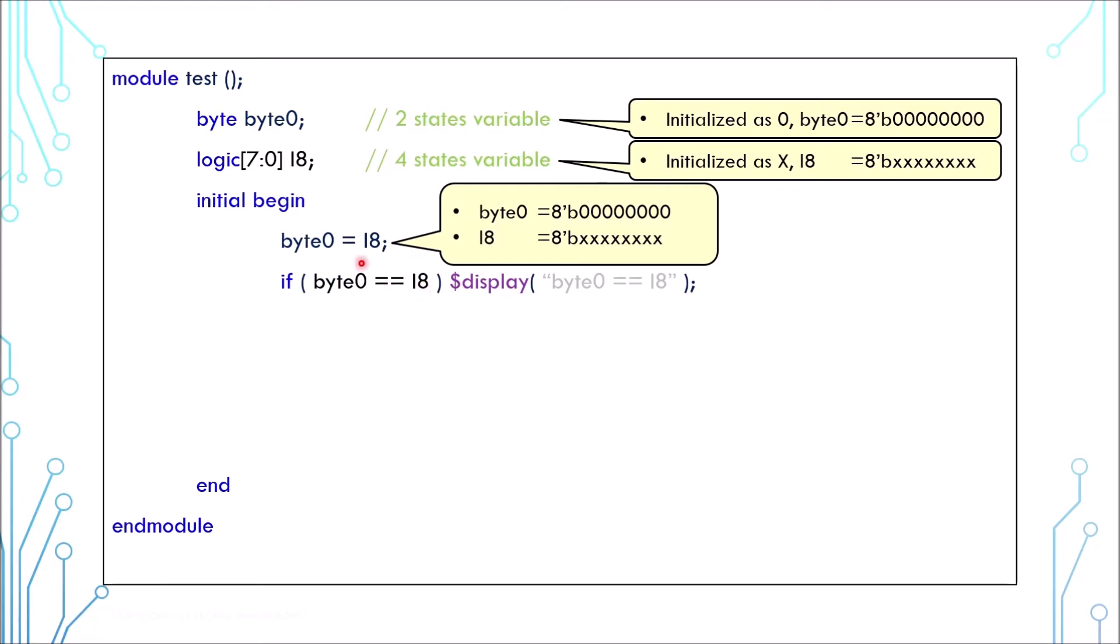We can compare the two values using double equals. In this case, the comparison would return true, meaning that the two values zero and X are the same, even though they are not. That's because double equals only compares 2-state values—the logic being all X is regarded as zero and therefore is the same as the byte.